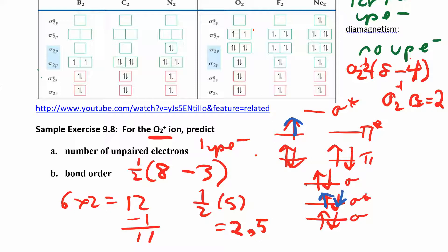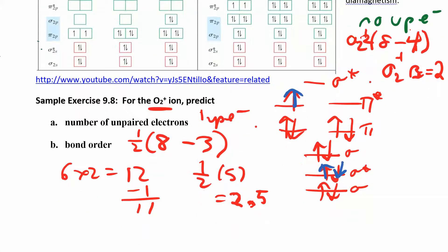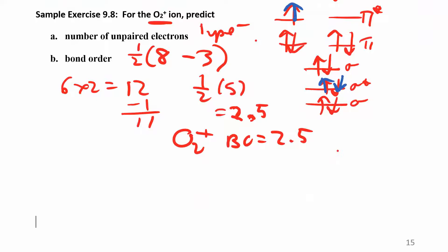If we compare the bond length or strength for O2 versus O2 plus: O2 plus has a bond order of 2.5, and O2 has a bond order of 2.0.